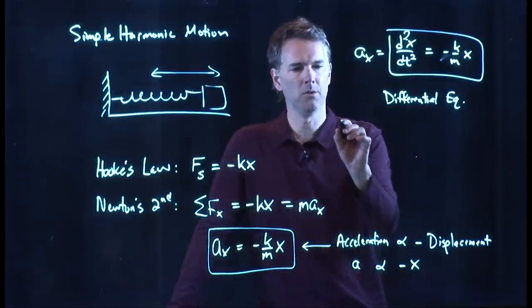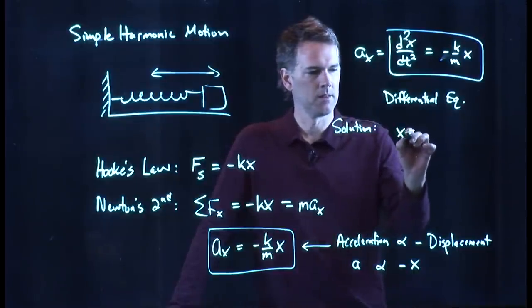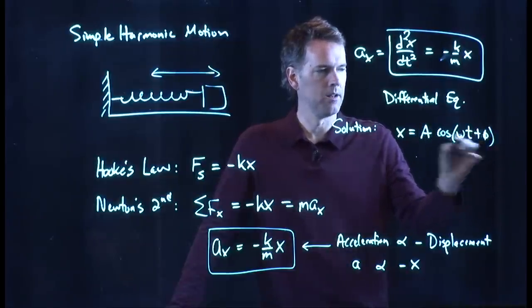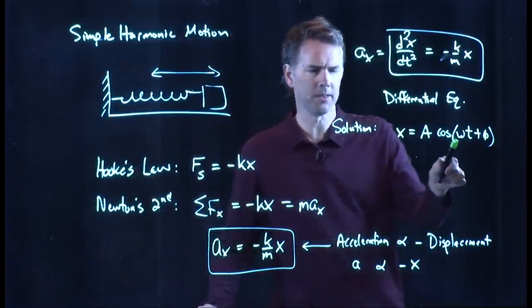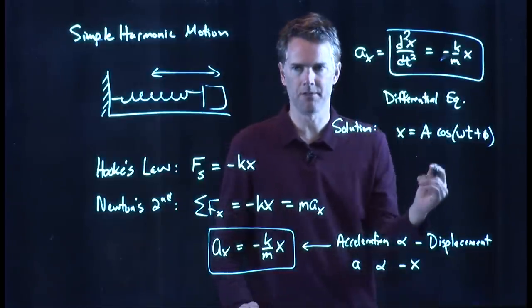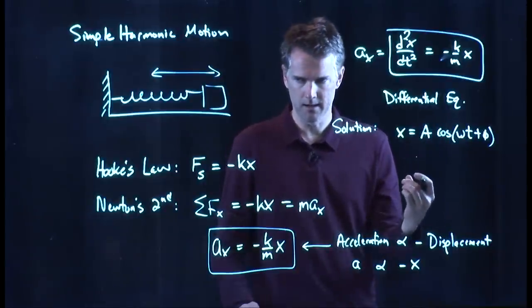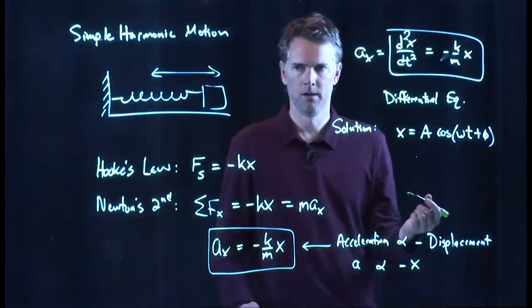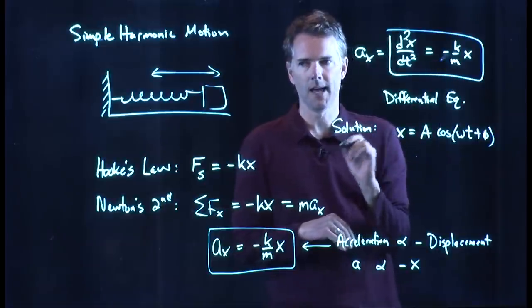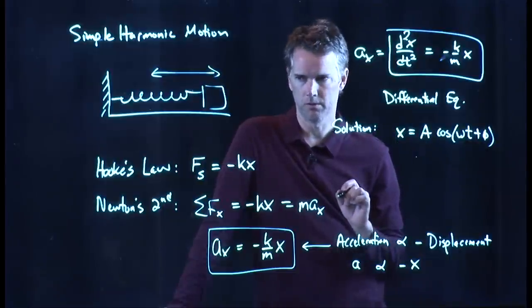And so one possible solution is the following. x equals a cosine of omega t plus phi. Let's just think about that for a second. If I take the derivative of a cosine, I get minus sine. And if I take the derivative of a minus sine, I get minus cosine. So that's my original function. But now I have that minus sign built into it. That looks like it's a good solution to this problem. And that's the one that we're going to use in attacking it.